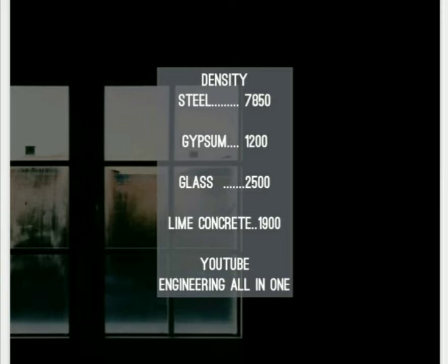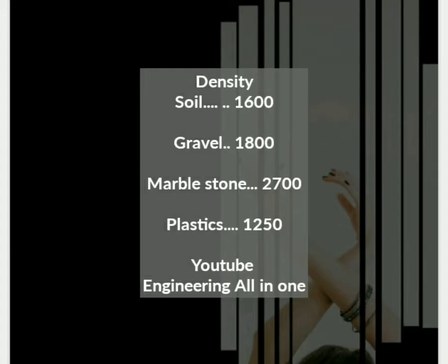Soil has a density of 1600 kg per cubic meter. Gravel possesses a density of 1800 kg per cubic meter. Marble stone possesses a density of 2700 kg per cubic meter.